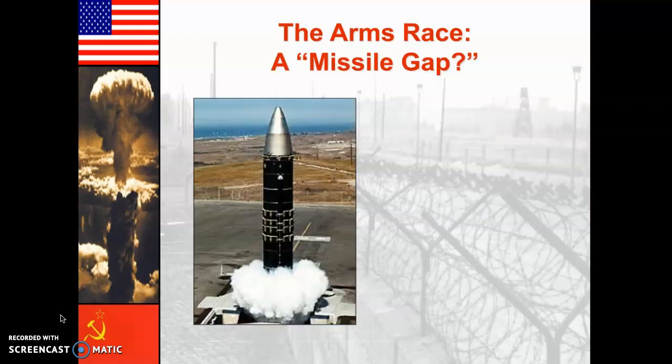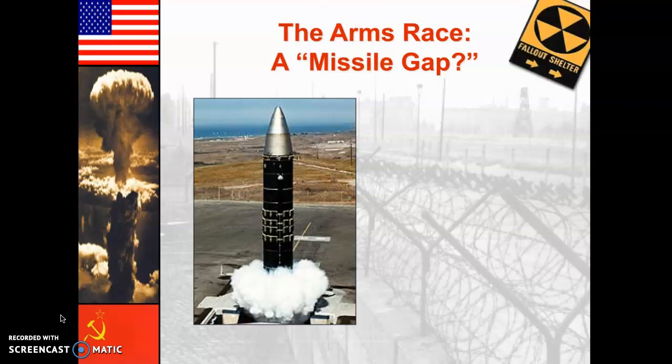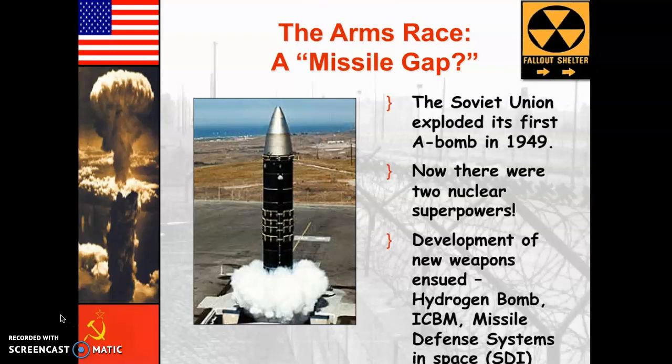The distrust between America and the Soviet Union, which we've already talked about a little bit, was made even worse by the fact that we had developed the atomic bomb, making Stalin even more suspicious of the United States. By 1949, the Soviet Union had tested its own atomic bomb, and this triggered the ultimate arms race that lasted from the 1950s all the way through the 1980s.